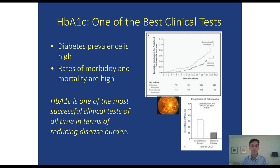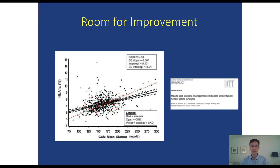While A1c is a great test, it does have some shortcomings and there is room for improvement. A recent study from Perlman and colleagues reinforces what we saw in the DCCT and ADAG plots: while there's clearly a linear trend between increasing mean glucose and increasing A1c, there's also quite a bit of scatter around the regression line, meaning we'll make errors when we infer average glucose from A1c.